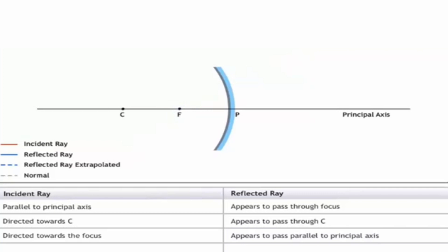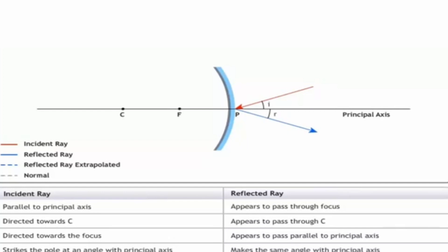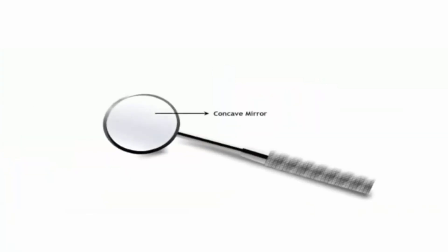Rule four: we have to ensure the second law of reflection is followed everywhere. If the incident ray makes some angle i with the principal axis, the reflected ray will also make the same angle with the principal axis. Keep these four rules in mind while studying image formation by convex mirrors.